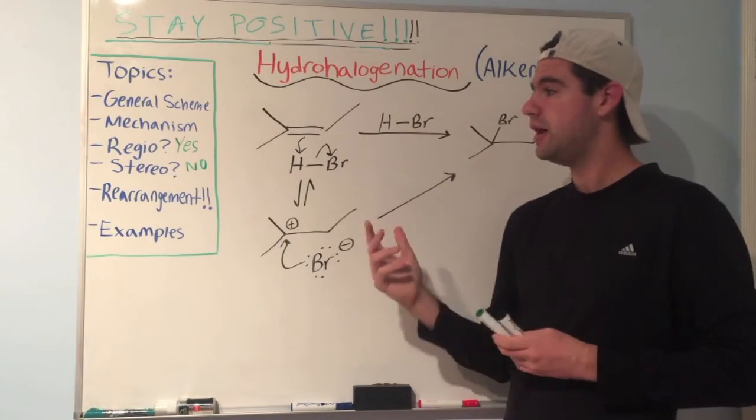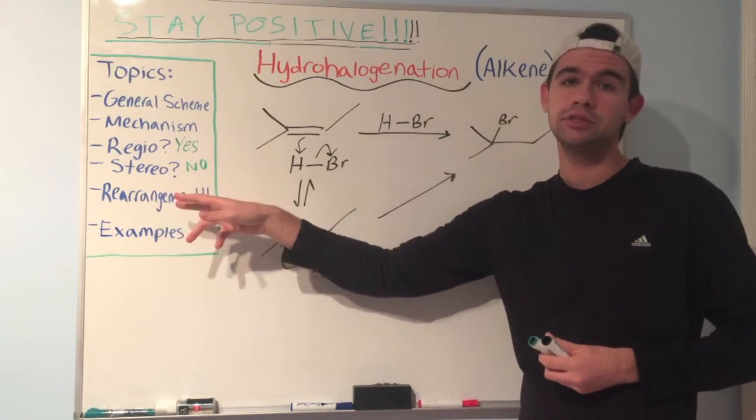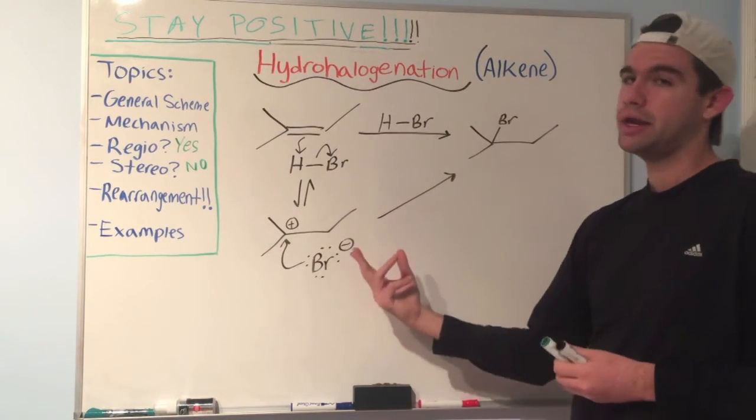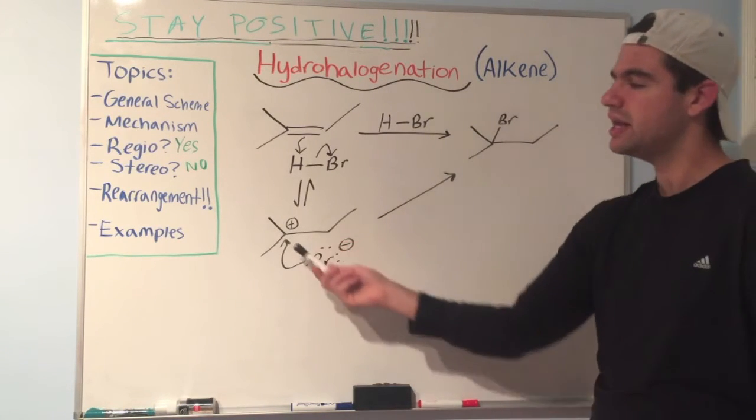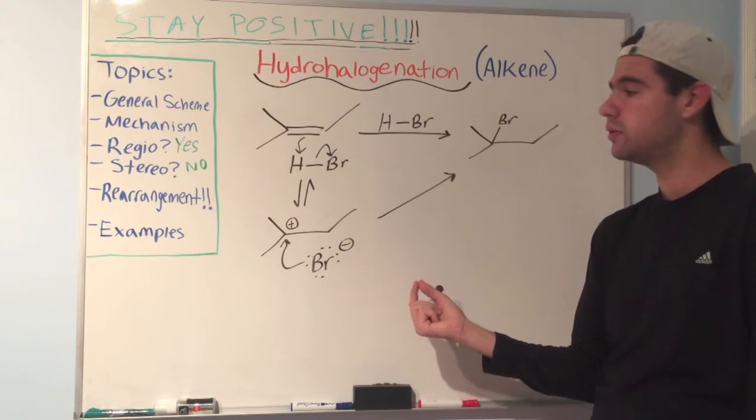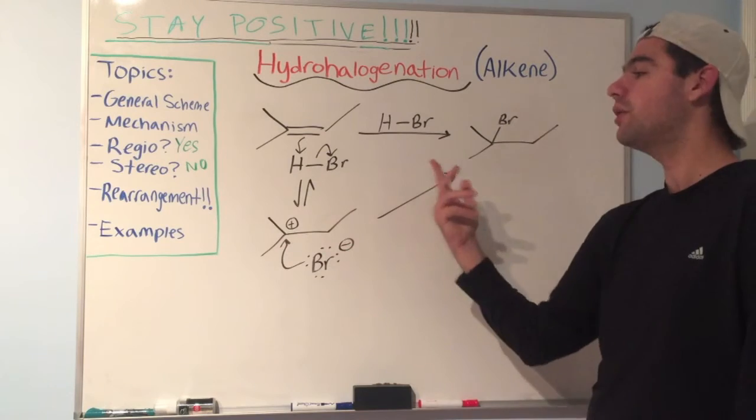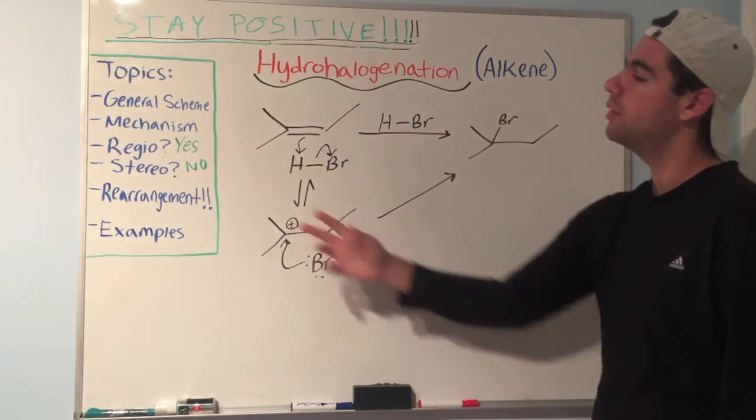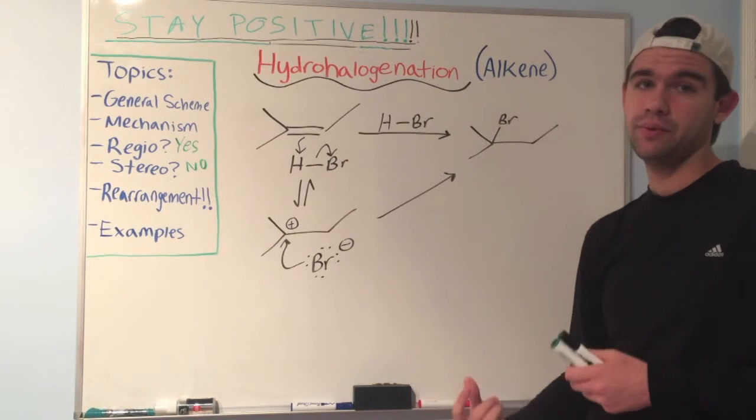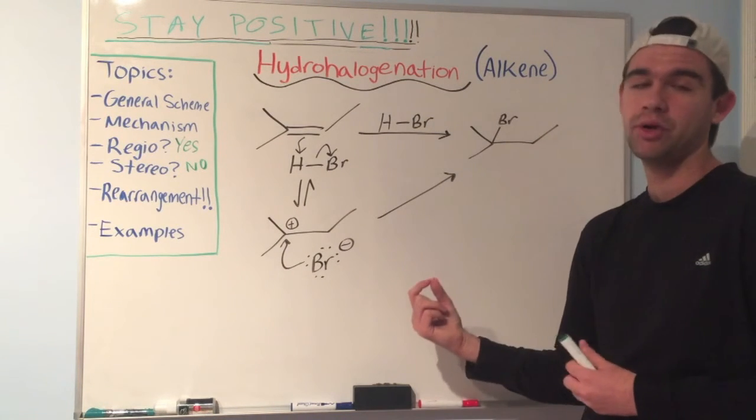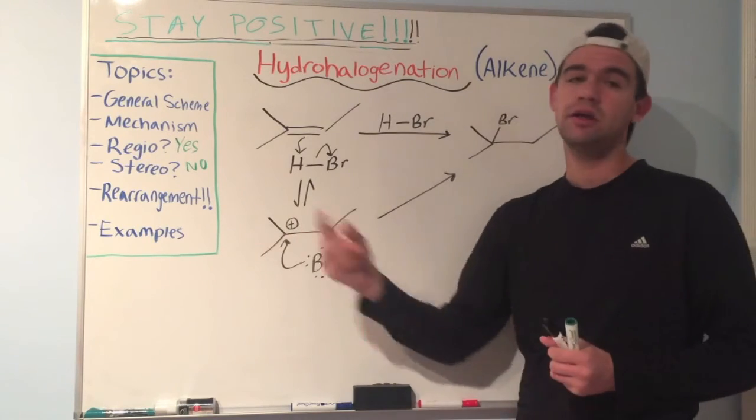And one last point that I really want to stress before we go into a couple examples is the importance of rearrangement. Any time you have a carbocation in your mechanism, you have to look for rearrangement. Here, was there any hydride shift we could do or methyl shift that we can do? No. This is a tertiary carbocation. There's no way we can make it more stable. But when we do some examples, we're going to see some cases where we have to consider rearrangement. You want your carbocation to be as stable as possible. So let's take a look at some examples.